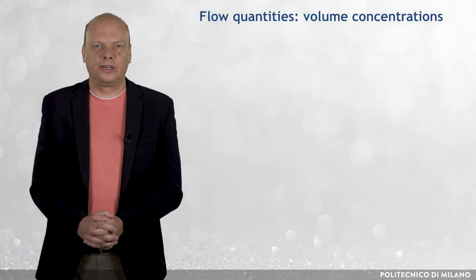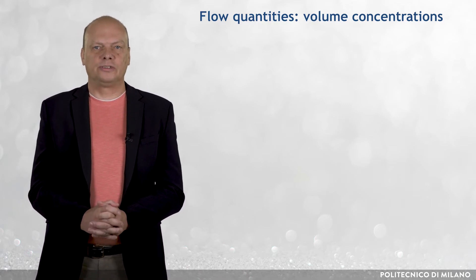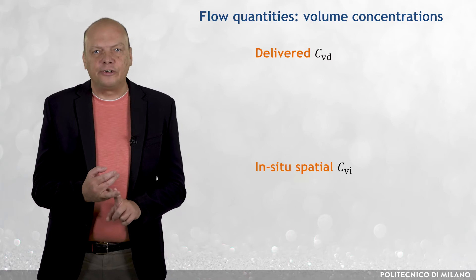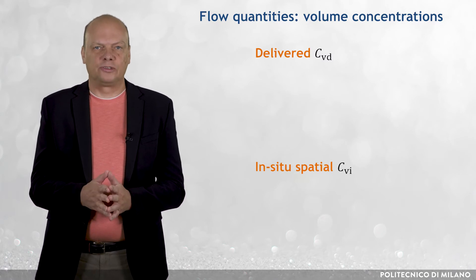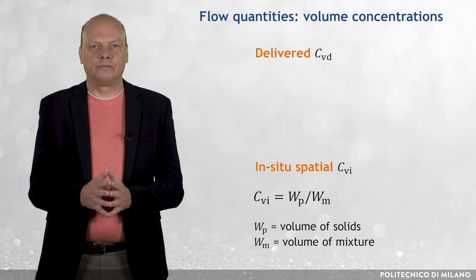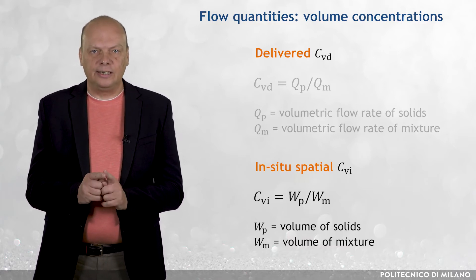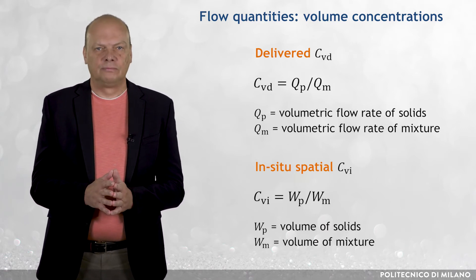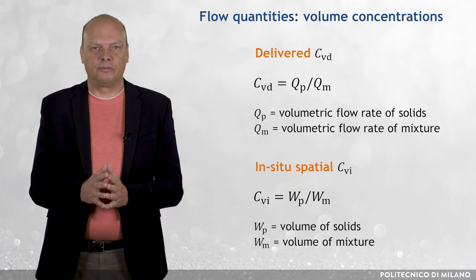Note that in specifying concentrations, care must be exercised in distinguishing between two different concentrations: the delivered one and the in-situ spatial one. Their definitions differ and so can their values in slurry flow. The spatial volume concentration is defined as a ratio of the volume of solids and the total volume of mixture within the pipe, while the delivered concentration is the ratio of volumetric flow rates of the solids and mixture. The difference in values of the two concentrations depends primarily on the type of slurry flow.